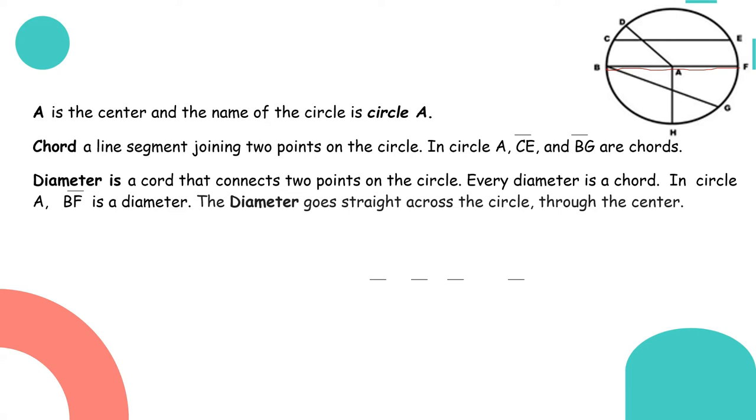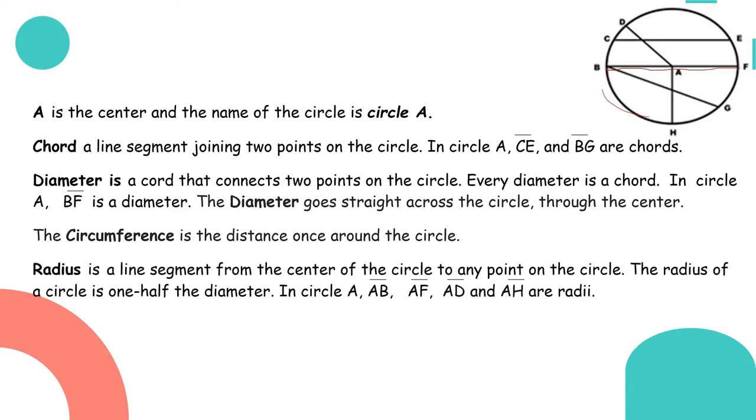Next, circumference is the distance around the circle. So when we take the whole circle, that distance is called the circumference. We will study this later in other topics. Then radius is a line segment from the center of the circle to any point on the circle. More than one radius is called radii. The radius of a circle is one half of the diameter. So meaning if we have one diameter, we have two radii. In circle A we have line segment AB, line segment AF, line segment AD, and line segment AH.